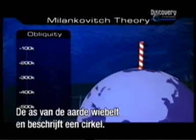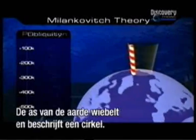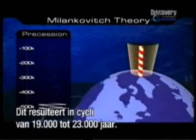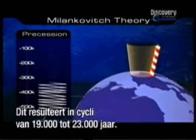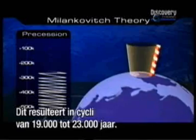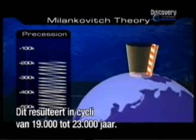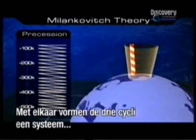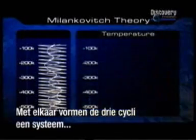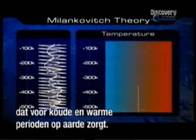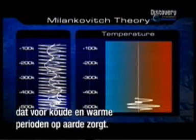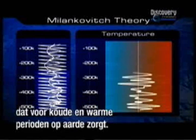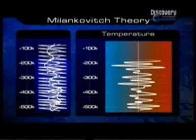The Earth's axis wobbles in space and describes a circle, which results in about 19,000 to 23,000-year cycles. When the three cycles are placed on top of each other, a final system emerges, throwing the Earth between warm and cold periods.